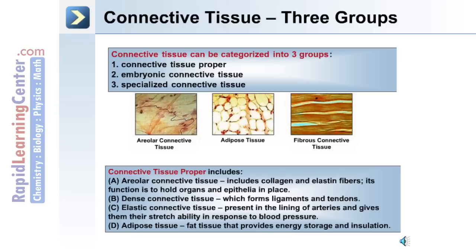Dense connective tissue forms the ligaments and tendons. Elastic connective tissue is present in the lining of arteries and gives their stretchability in response to changes in blood pressure. And adipose tissue, or fat tissue, provides energy storage and insulation.